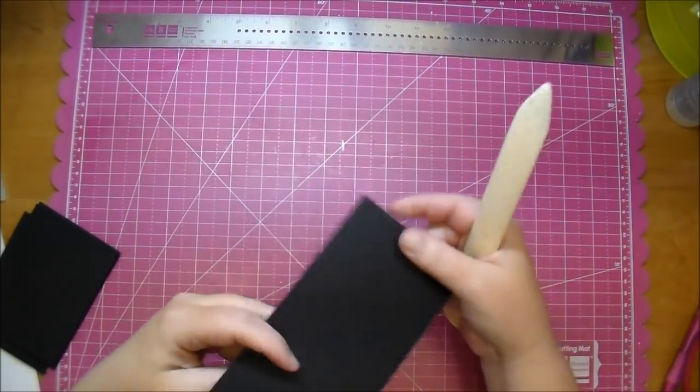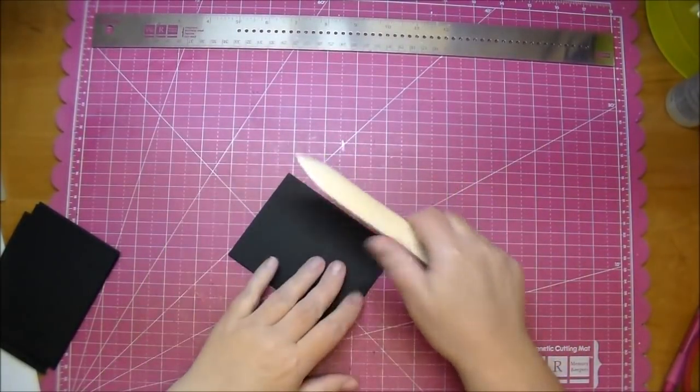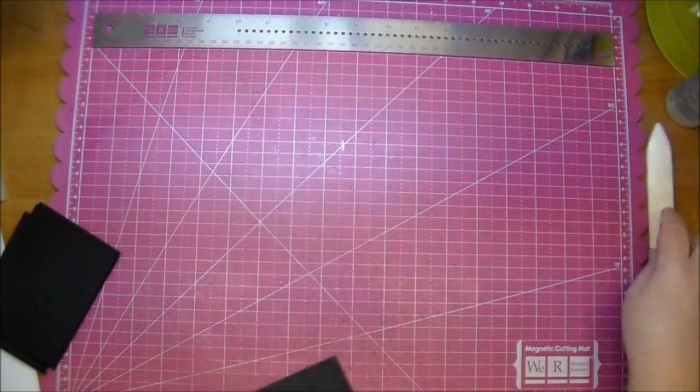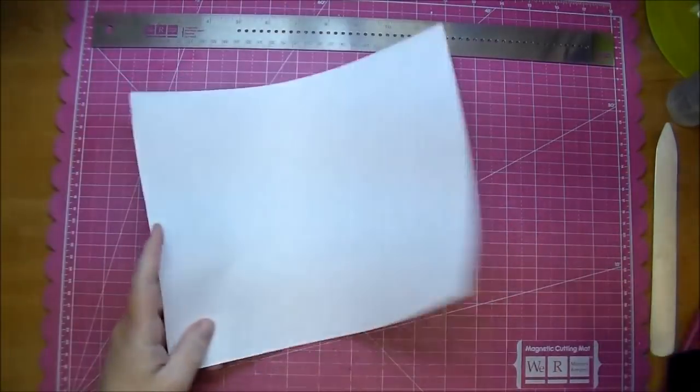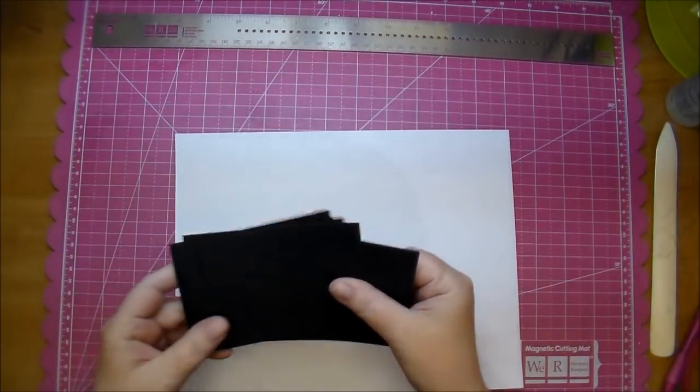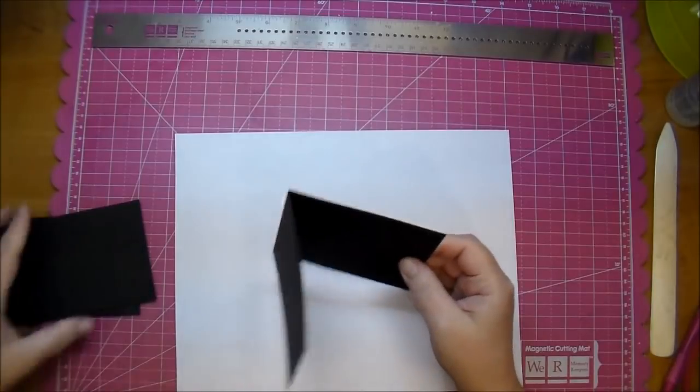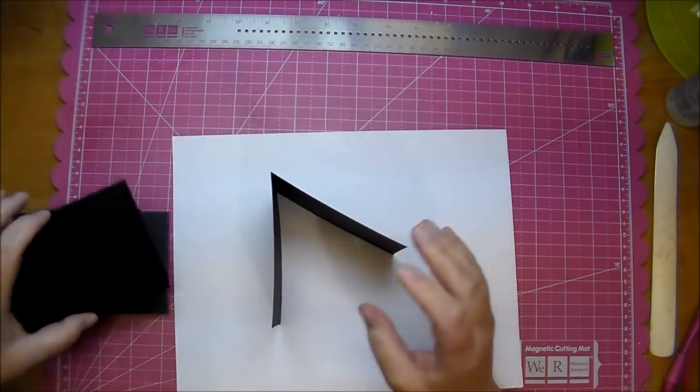So now I've scored all my pieces. You want to fold them on the score line and burnish them down with a bone folder. And now we're going to glue them together. I like to use wet glue if you prefer tape. That's good too, but wet glue gives you a second to adjust it if you need to.